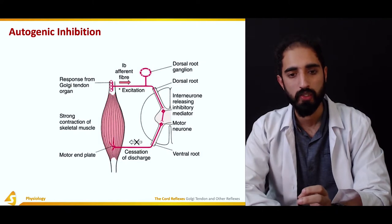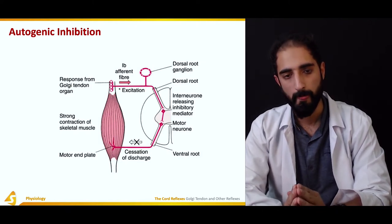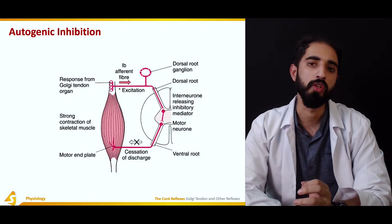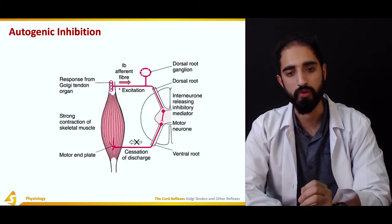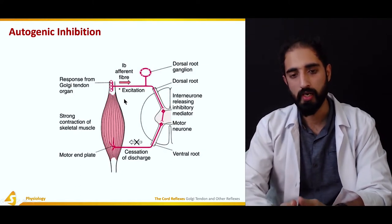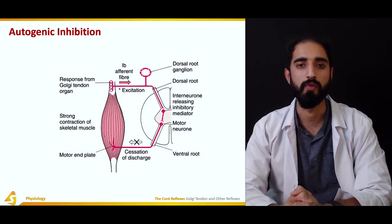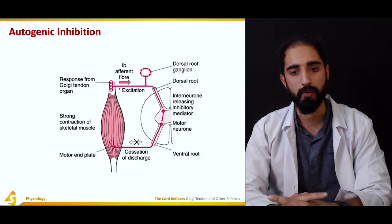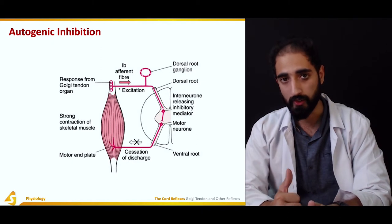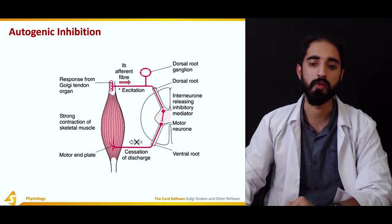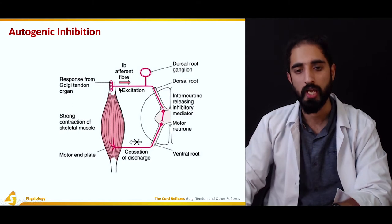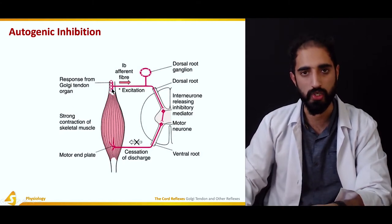This brings us to two different concepts: autogenic inhibition and reciprocal inhibition. Autogenic inhibition is associated with the Golgi tendon organ. When we isometrically contract a muscle, this activates the Golgi tendon organ and the 1b afferent fiber, which then activates the motor neuron to the antagonistic muscle but inhibits the motor neuron to the same muscle — causing inhibition of the same muscle from which the sensory input was received. This is known as autogenic inhibition.